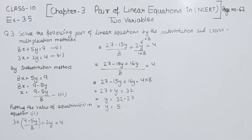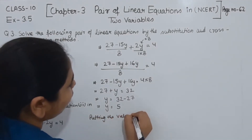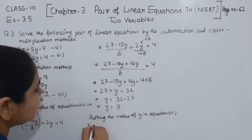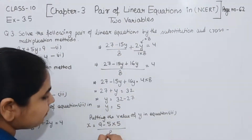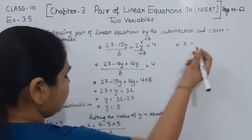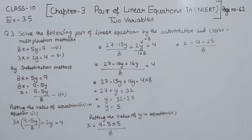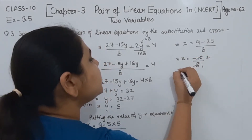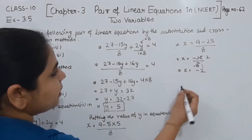We have found y equals 5. Now we substitute this into equation 3 to find x. Putting y equals 5: x equals (9 minus 5 times 5) over 8, which is (9 minus 25) over 8, equals minus 16 over 8. Since 16 divided by 8 is 2, the value of x is minus 2, and the value of y is 5.